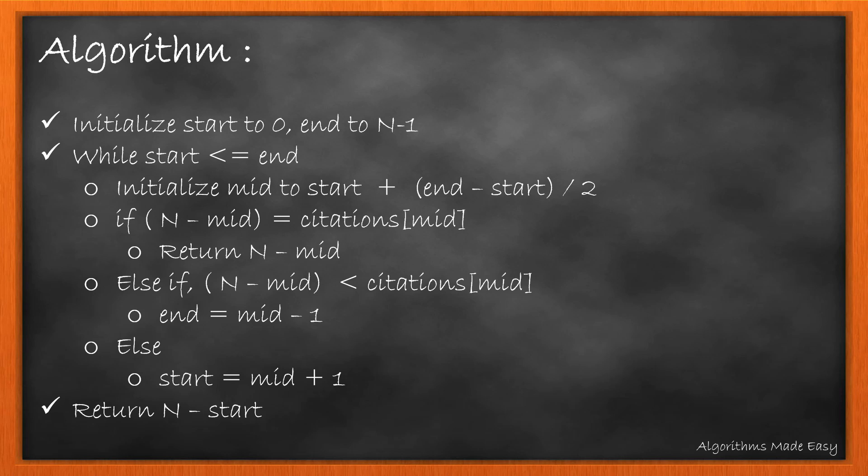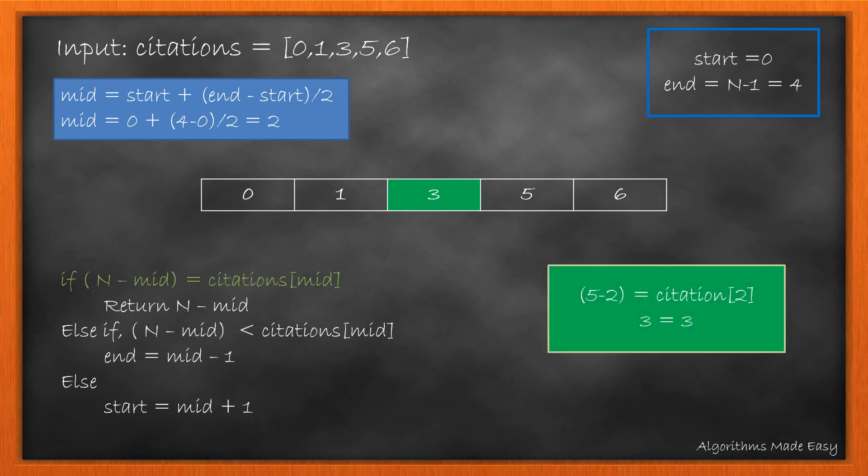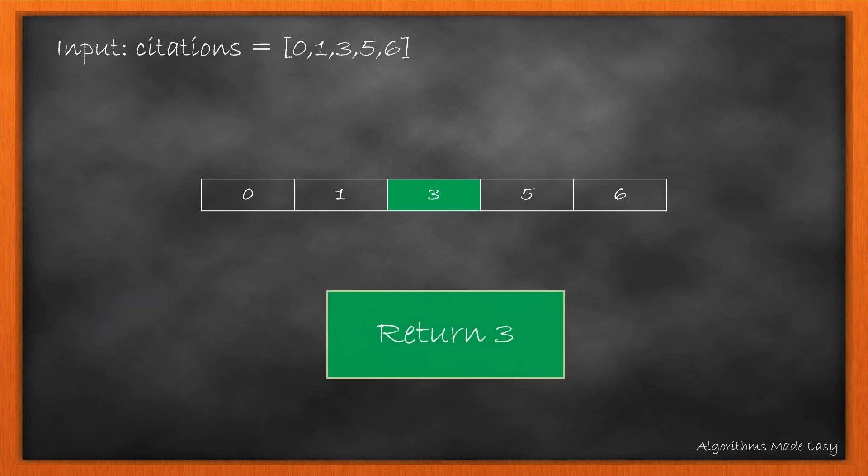Let's see it visually with an example. Initially start will be 0, end will be N-1. And we will calculate the mid. So the mid becomes 2 and the element at mid is 3. Now we check our first condition and see that it satisfies. So we return N-Mid that is 3.